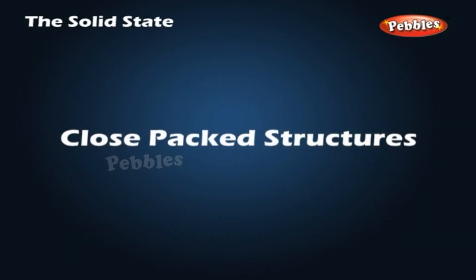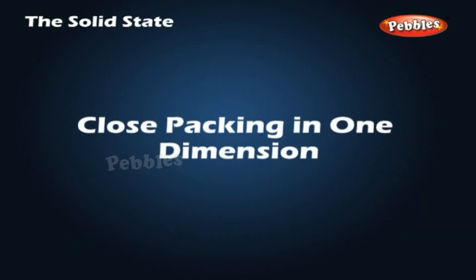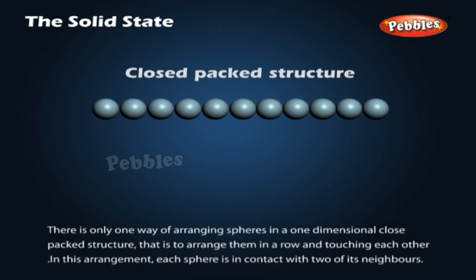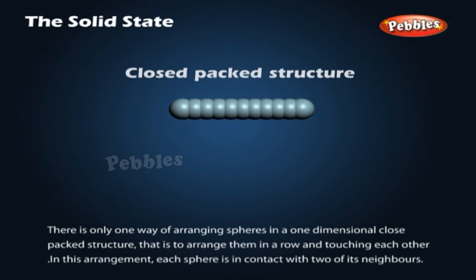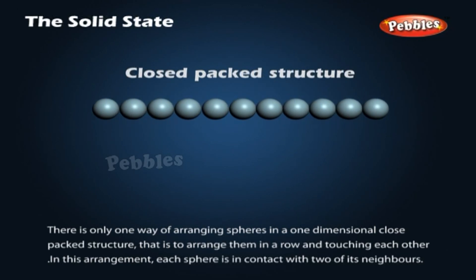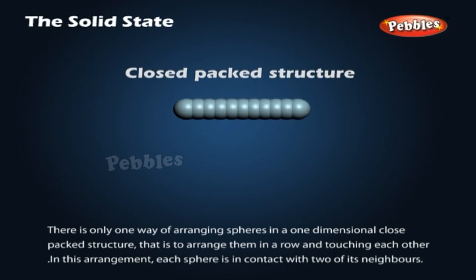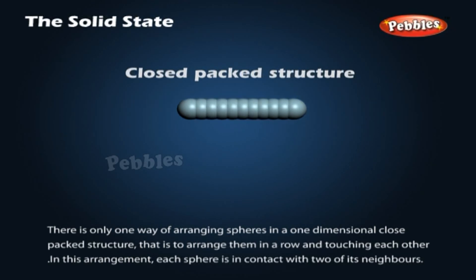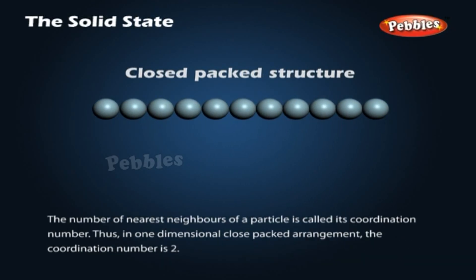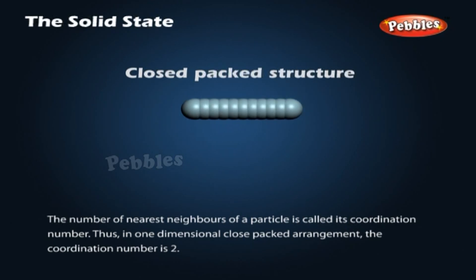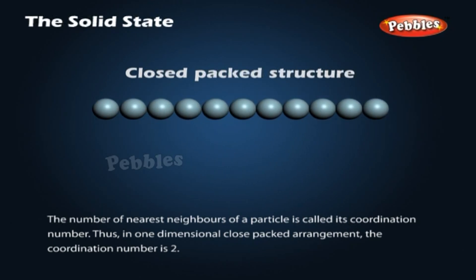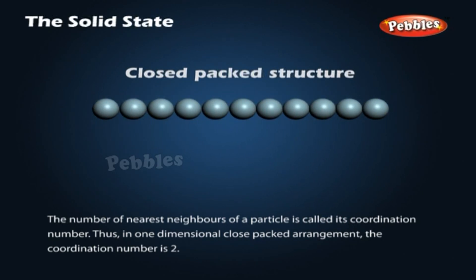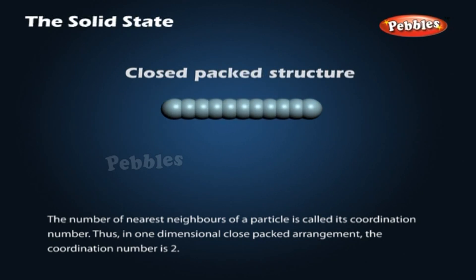Close-packed structures. Close packing in one dimension: there is only one way of arranging spheres in a one-dimensional close-packed structure — to arrange them in a row touching each other. In this arrangement, each sphere is in contact with two of its neighbors. The number of nearest neighbors of a particle is called its coordination number. Thus, in a one-dimensional close-packed arrangement, the coordination number is two.